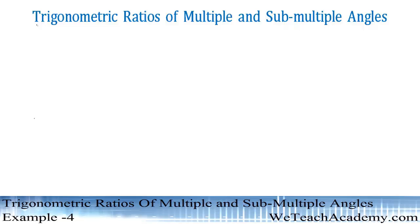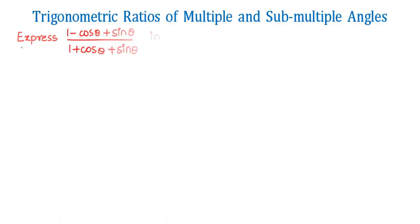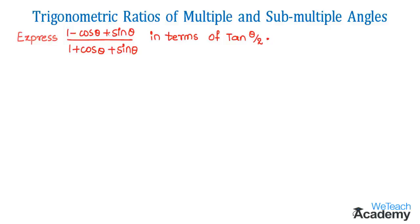Hello friends, welcome to VDitch Academy. In this section we are going to deal with a few examples on trigonometric ratios of multiple and sub-multiple angles. The given example is: express (1 minus cos theta plus sin theta) divided by (1 plus cos theta plus sin theta) in terms of tan(theta/2).